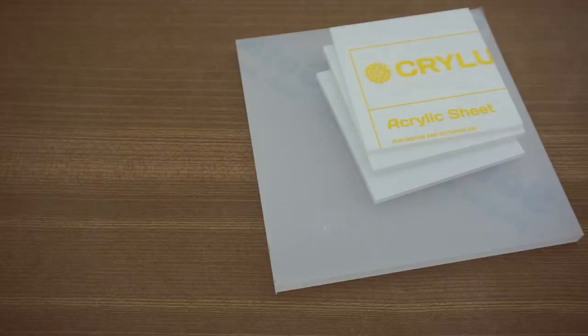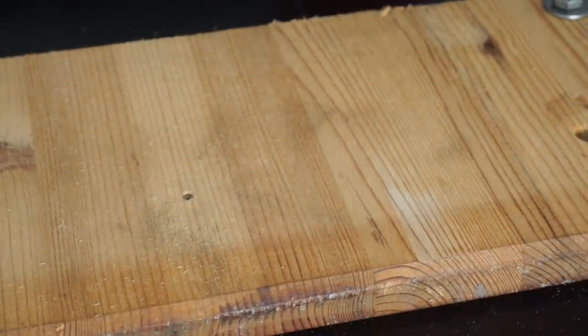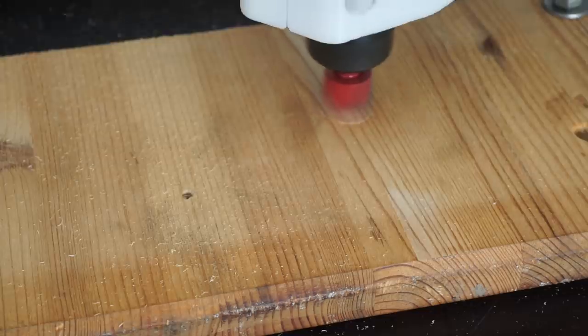I am using 5 and 8mm thick cast acrylic which has great optical clarity and machines very nicely. But first I am surfacing my wasteboard in order to get a flat surface on which I then use double sided tape to stick down my acrylic sheets.